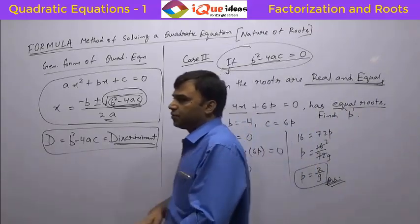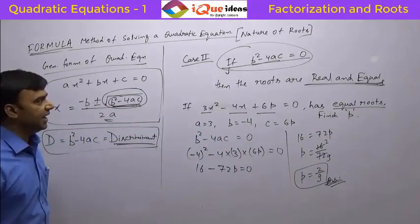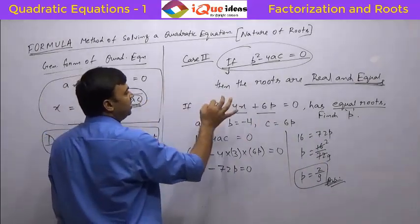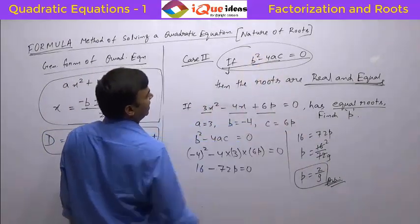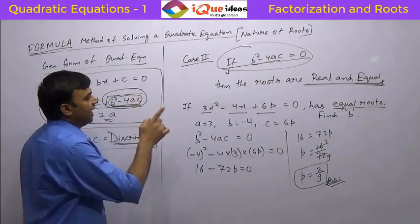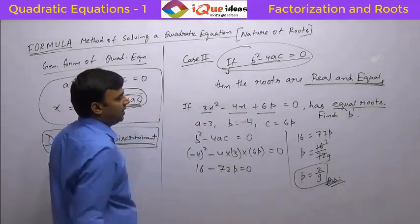The basic crux of this question was to identify that for equal roots, the only thing you need to do is put b squared minus 4ac equal to 0 after identifying the values of a, b, and c correctly.